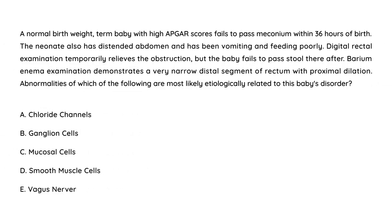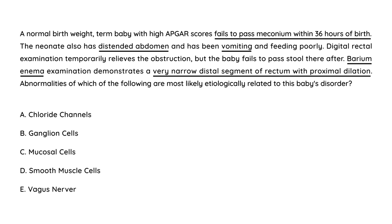Second vignette: A normal birth weight term baby with high APGAR scores failed to pass meconium within the first 36 hours. The neonate has a distended abdomen, has been vomiting, and feeding poorly. Digital rectal exam temporarily relieves the obstruction but the baby fails to pass stool thereafter. Barium enema demonstrates a very narrow distal segment of the rectum with proximal dilation — a classic description. The nerves innervating the distal colon are congenitally absent; those nerve cells are known as ganglion cells.